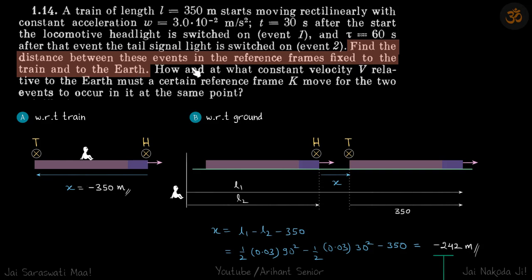In the second part, we need to find what constant velocity an observer should move at for the two events to occur at the same point.